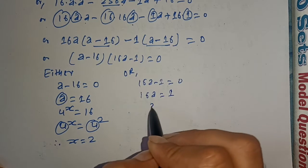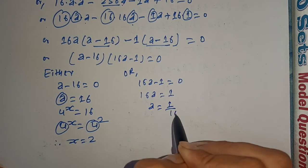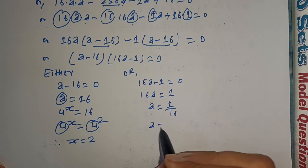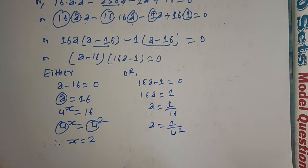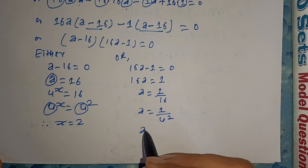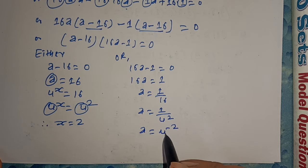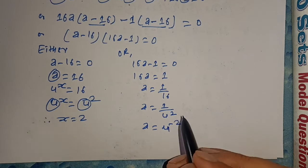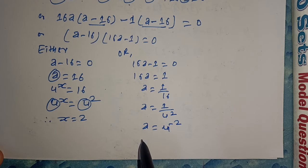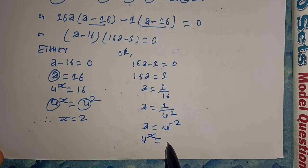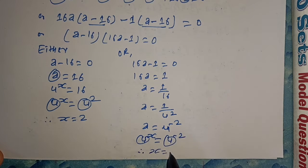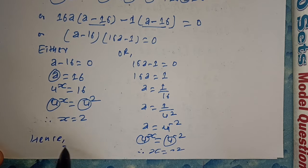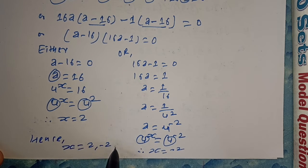Since 16a minus 1 equals zero gives a equals 1 upon 16, and 4 to the power x equals 1 upon 4 squared equals 4 to the power minus 2, we get x equals minus 2. So the value of x is minus 2. That's the value — x equals minus 2.